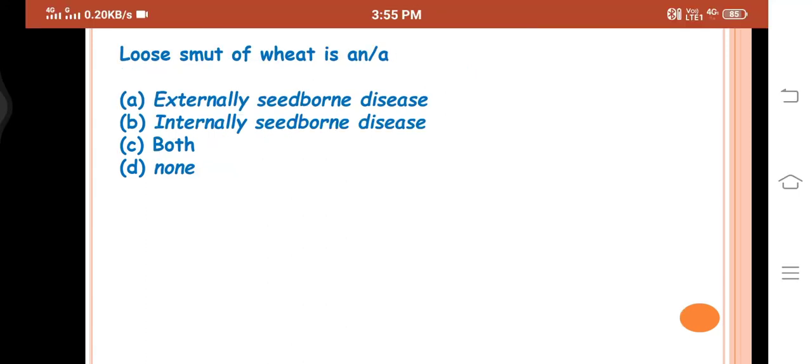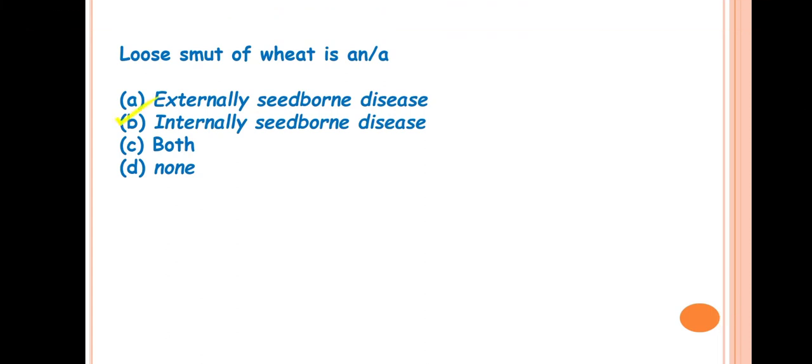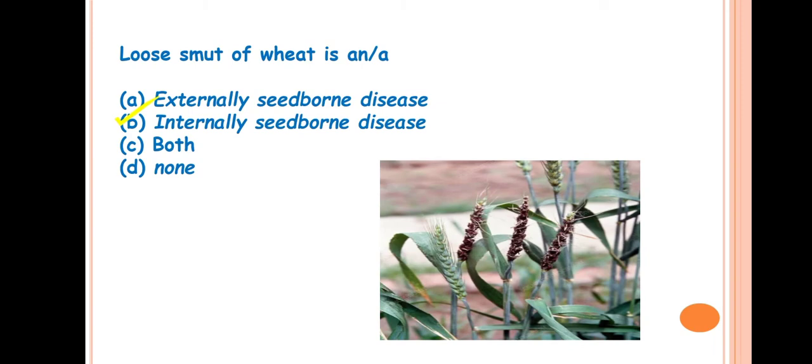Next question is, loose smut of wheat is a? The answer is B, internally seed-borne disease. Loose smut of wheat is caused by the fungus Ustilago nuda tritici. This disease was first reported in India in 1953 by Luthra. This is a very infectious disease. The entire grain will be converted into loose black mass or loose sooty mass. Here in this photo you can see, this grain is converted into black powdery mass that is called loose smut. This is a very infectious disease and a systemic disease.